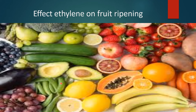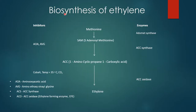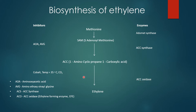The most accepted pathway for synthesis of ethylene is the methionine pathway. Biosynthesis of ethylene starts from methionine. Methionine is converted into S-adenosylmethionine with the help of an enzyme, AdoMet synthase. This S-adenosylmethionine is then converted into ACC, also called 1-aminocyclopropane-1-carboxylic acid, with the help of an enzyme ACC synthase. ACC is then converted into ethylene with the help of an enzyme ACC oxidase, at a temperature below 35 degrees centigrade and in the presence of carbon dioxide.